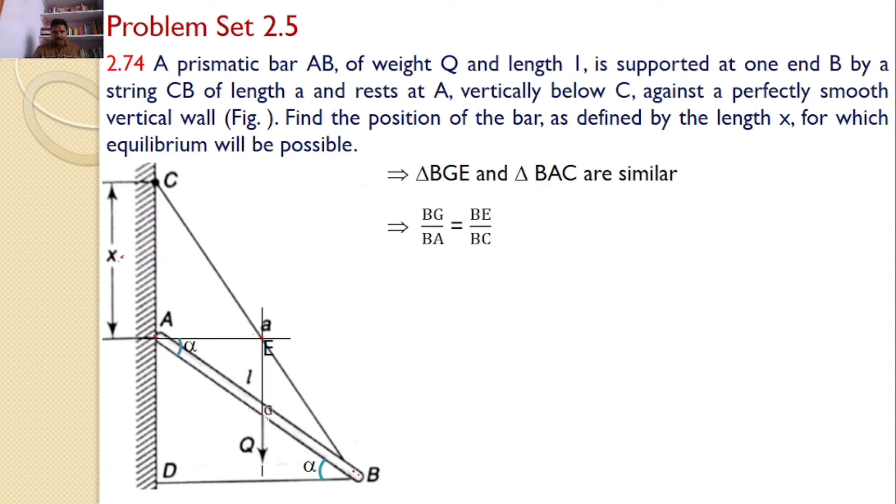What is that? BG divided by BA is equal to BE divided by BC. Clearly you know that BG, this is the center point. Why? At G the weight is acting, that means G is the center point for the prismatic bar AB. So BG is half of that, or you can say BA is equal to two times BG. And given that BC is equal to a. Substitute here, so upon simplification I can find the value BE is equal to a by 2, which is nothing but the value of EC because it is passing through the center. So EC value I identified and that value is a by 2.